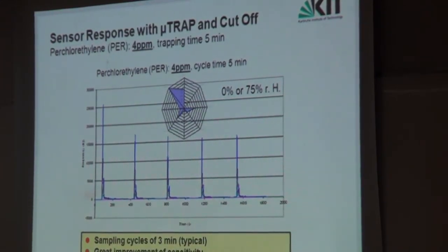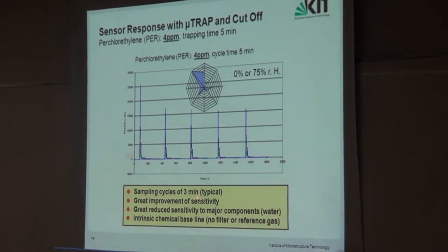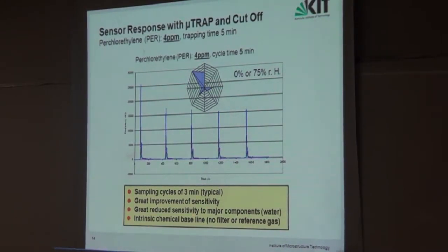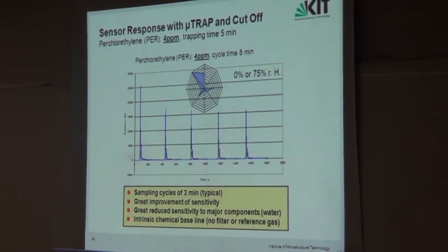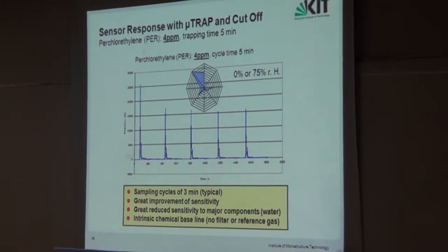The advantages of this approach include typical sample cycles of three minutes, a great improvement in sensitivity, greatly reduced sensitivity to major background components like water, and a self-built baseline — we don't need a clean reference gas bottle or filter anymore. This makes it a perfect setup for a continuously running room contamination monitor.